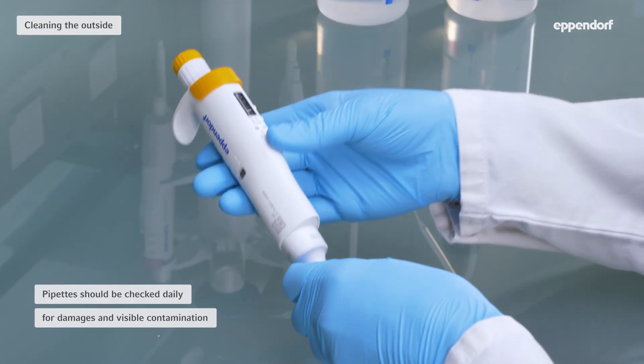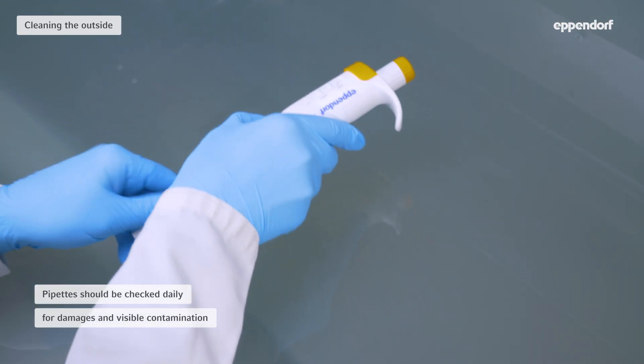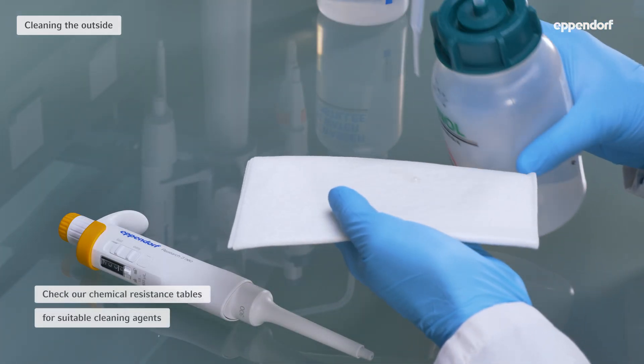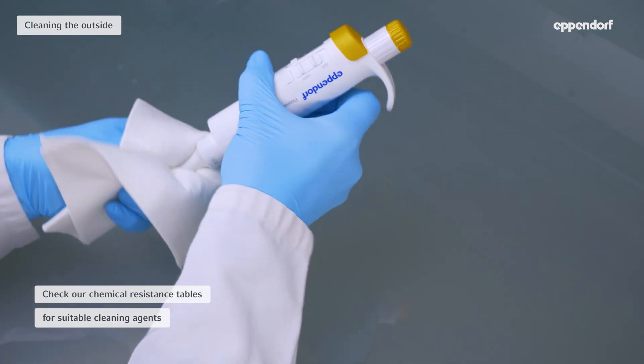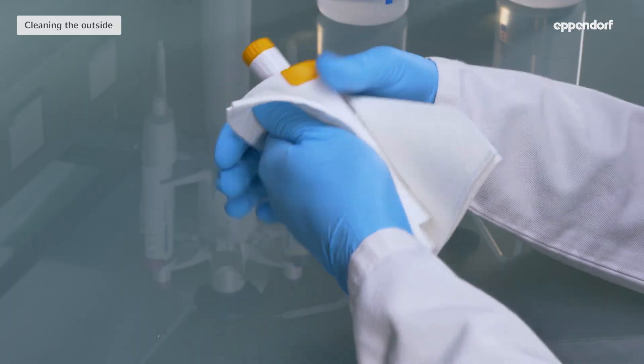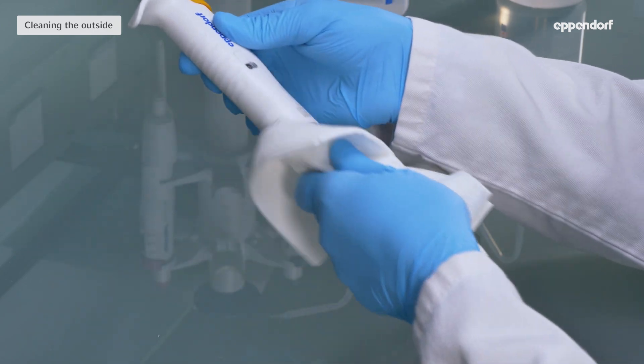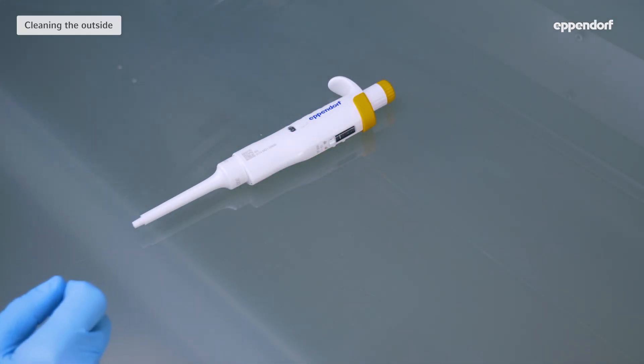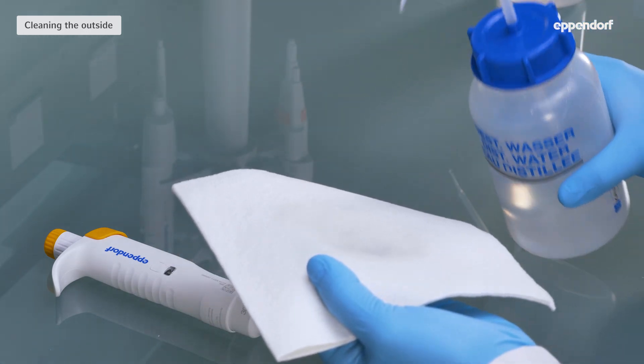Pipette should be checked daily for damages and visible contamination. If the pipette is contaminated on the outside, wipe it with a cloth dampened in 70% ethanol or a mild detergent. Wipe off the cleaning agent with a cloth dampened in distilled water.